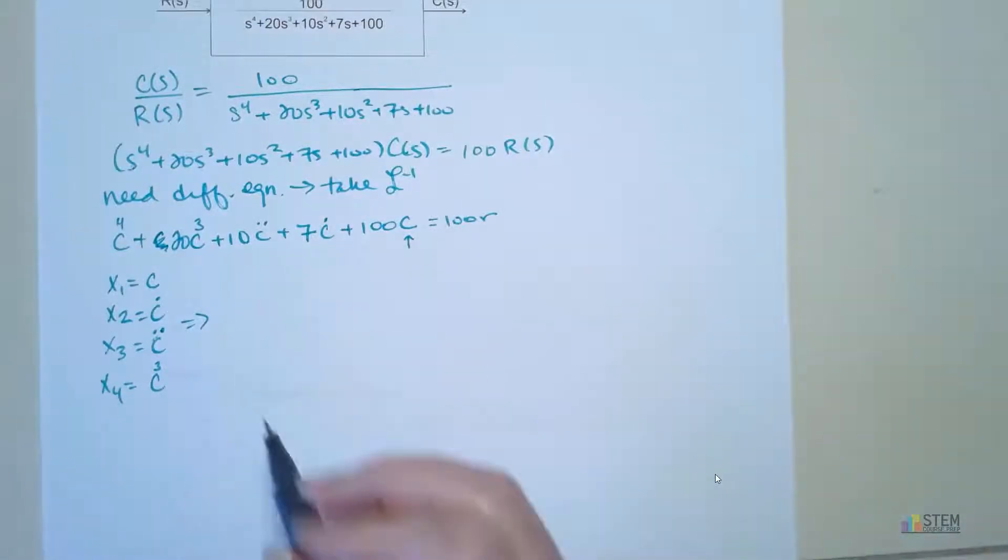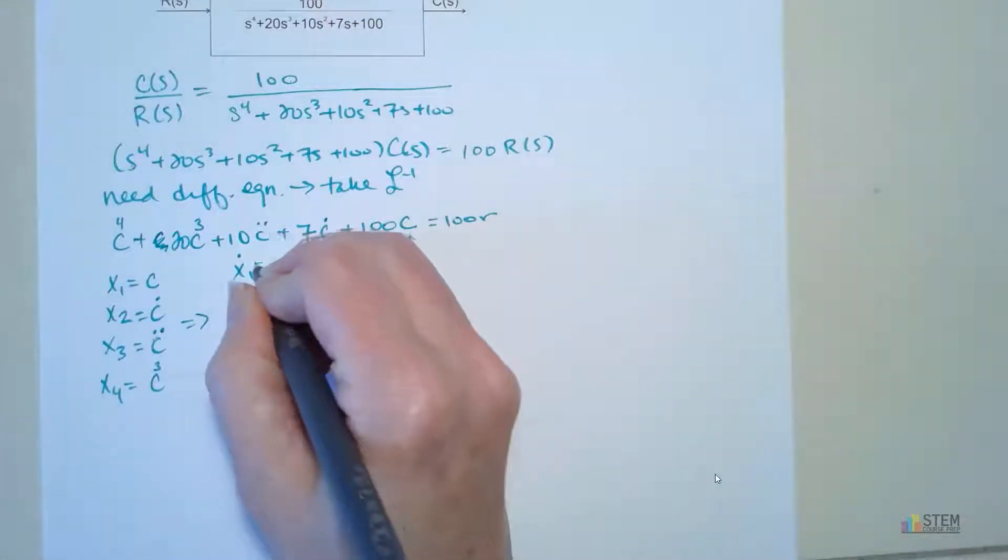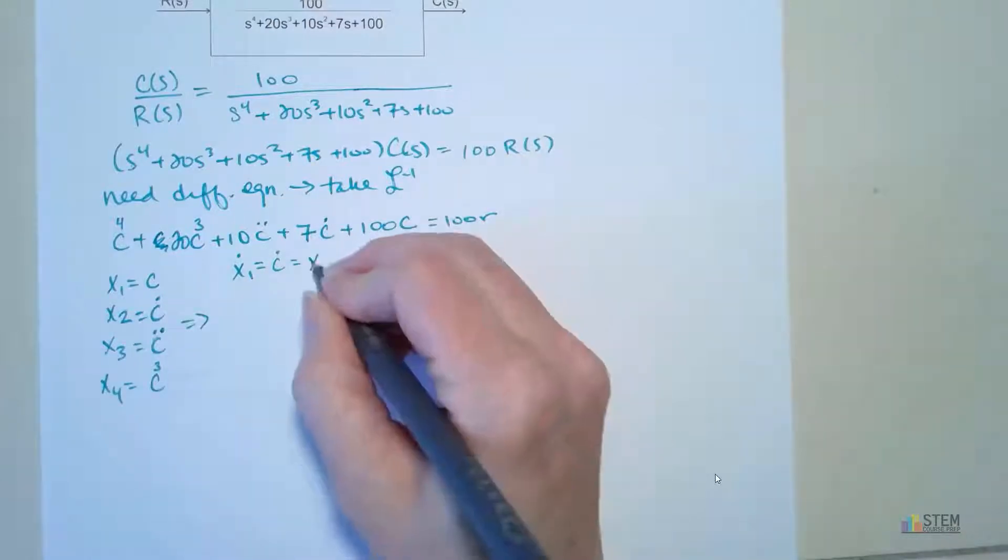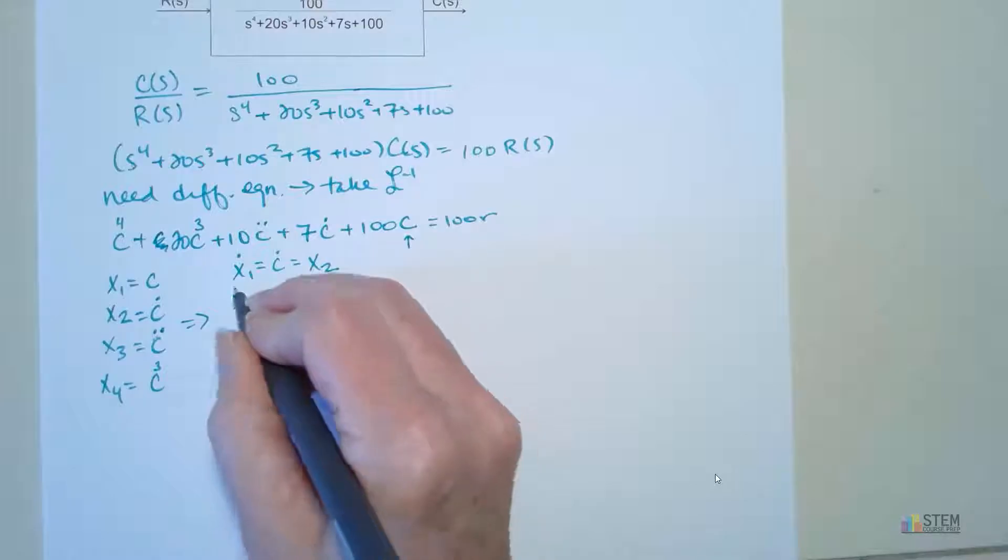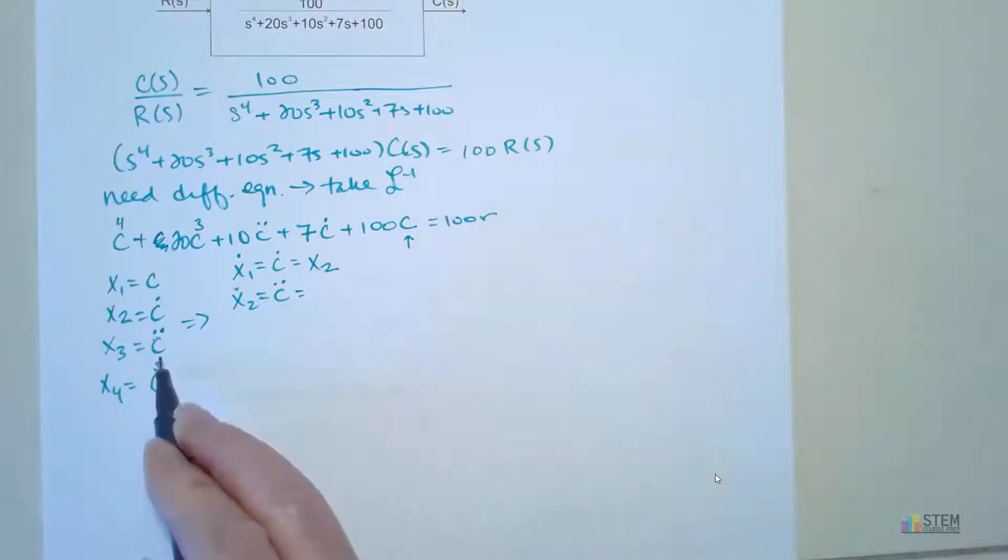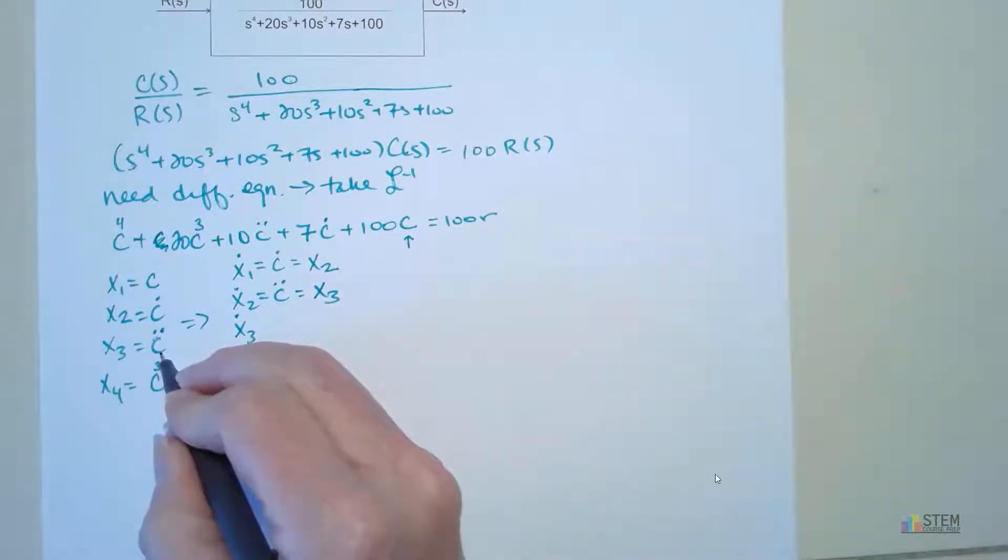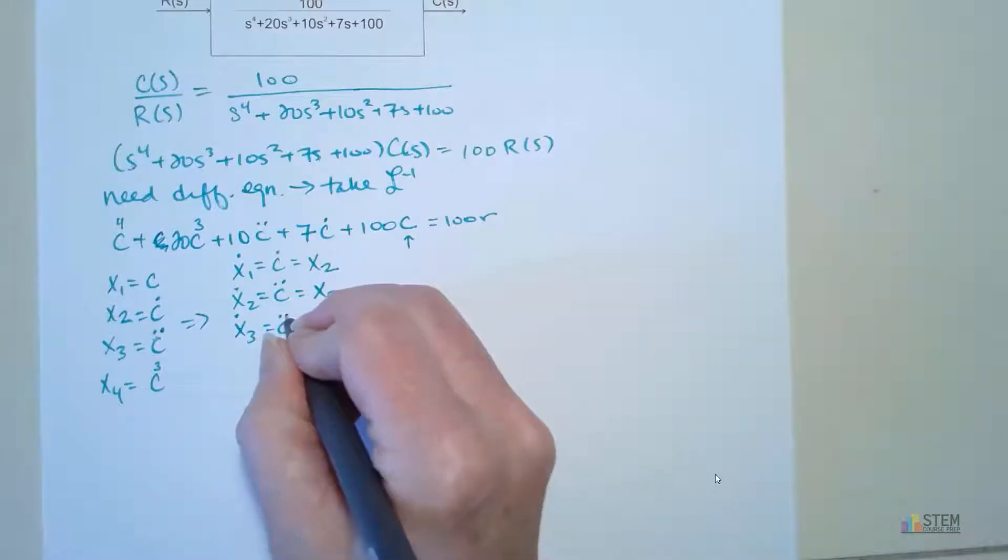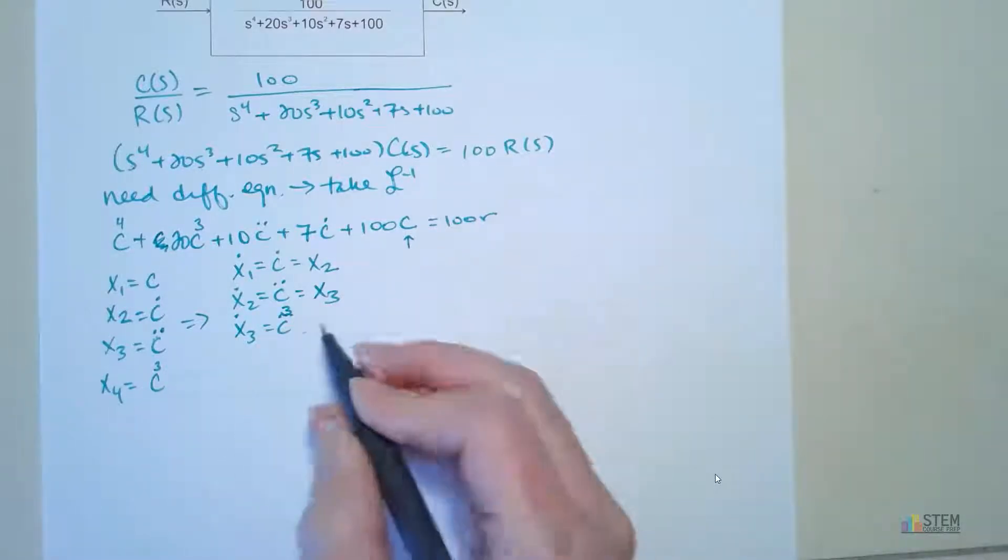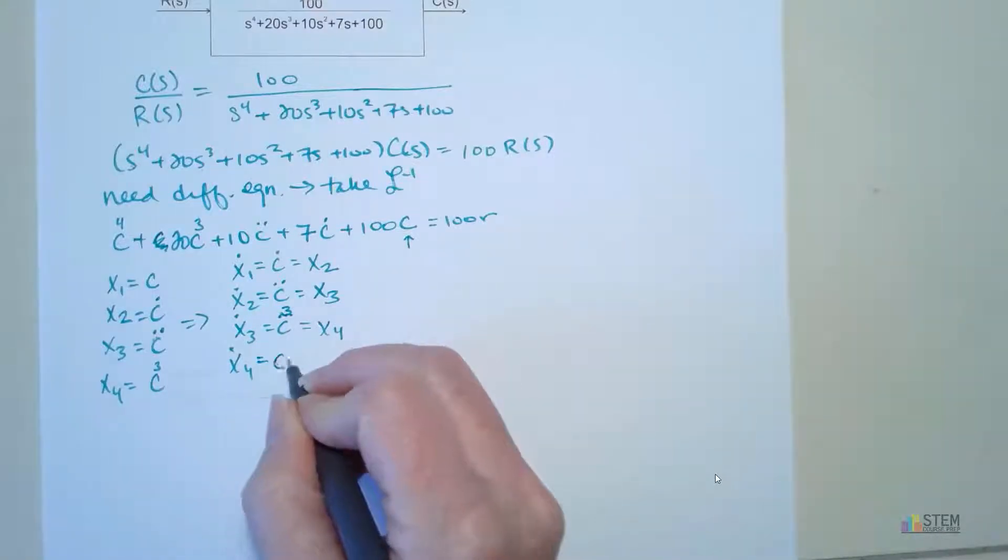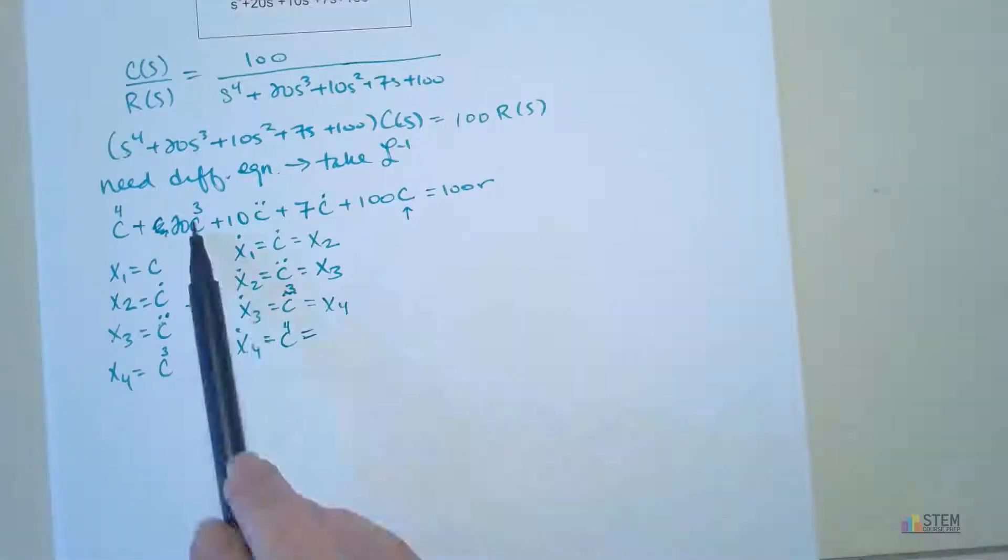Now, take the derivative of all of those. x1 dot gives you c dot, but c dot is x2. x2 dot is c double dot, but c double dot is represented by x3. x3 dot will be the 3rd derivative of c. And then that is represented by x4. Finally, we get to x4 dot. And that's going to give us the 4th derivative of c. So we got the 4th derivative of c. That's going to take us back up here.